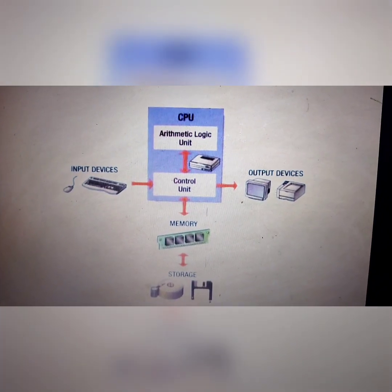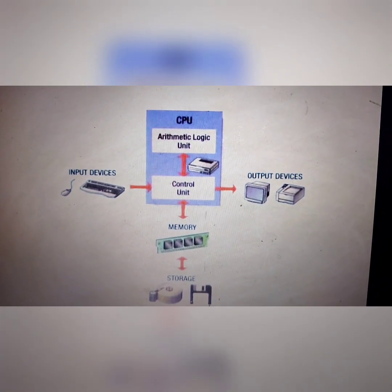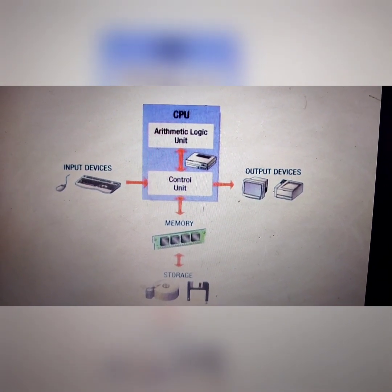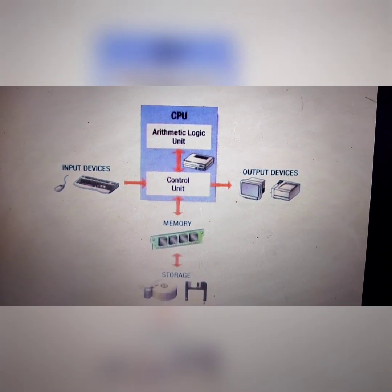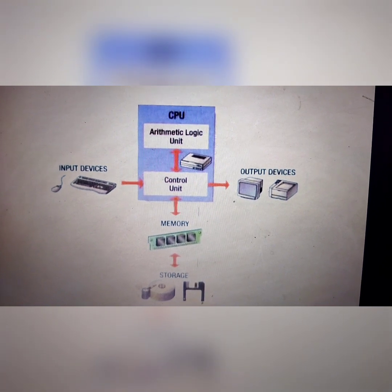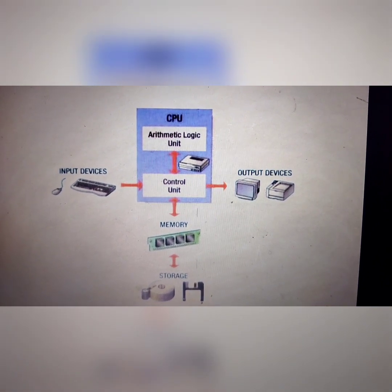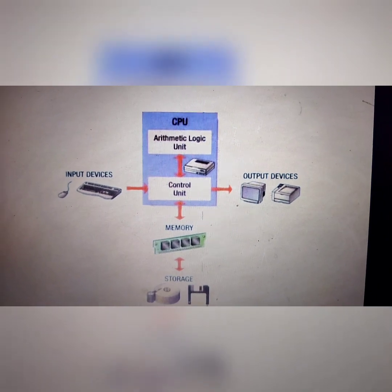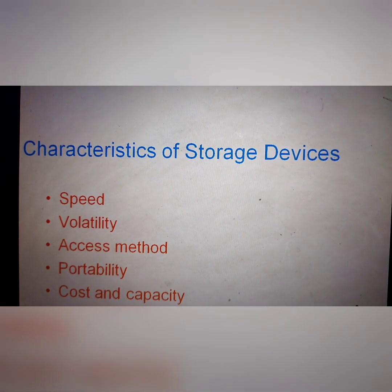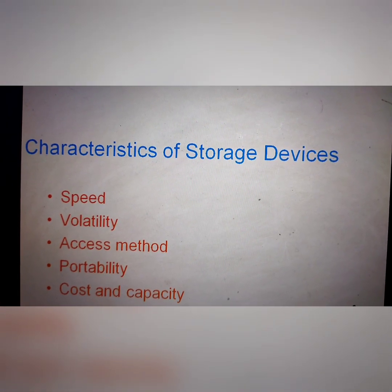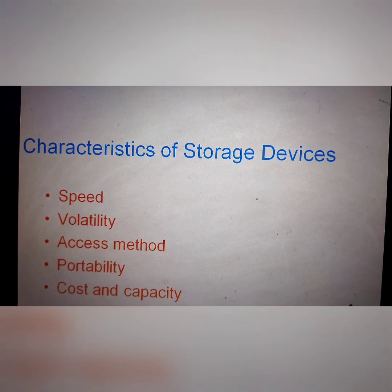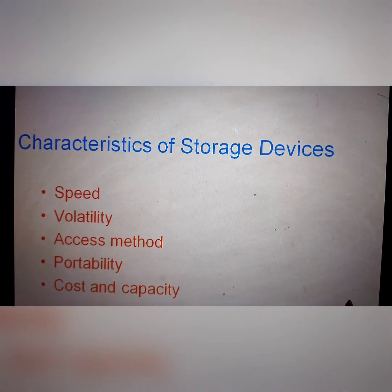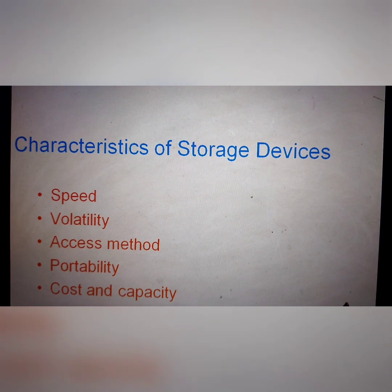Now see the structure of the CPU. First is the Arithmetic Logic Unit, second is the Control Unit, then Input Devices, Output Devices, Memory, and Storage. Now talking about the characteristics of storage devices: first Speed, Validity, Access Method, Portability, Cost, and Capacity. So all of these are characteristics of storage devices.